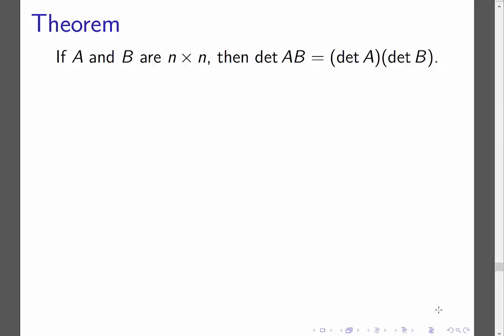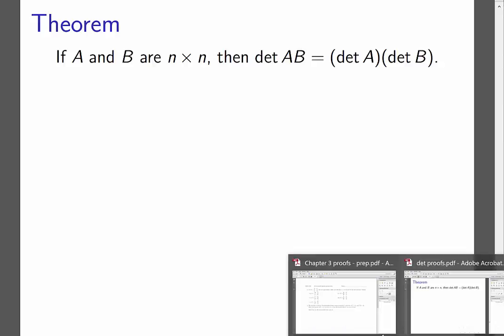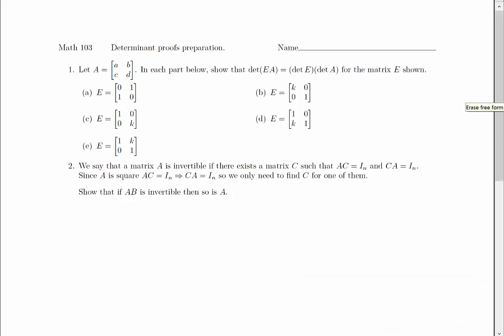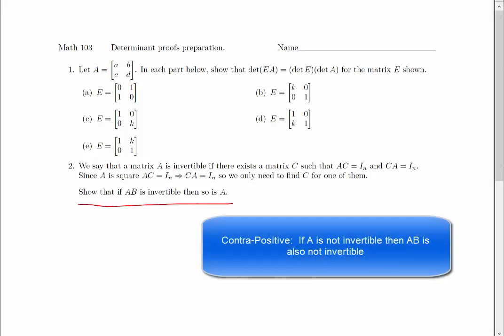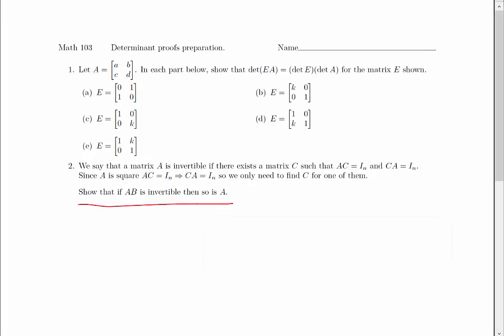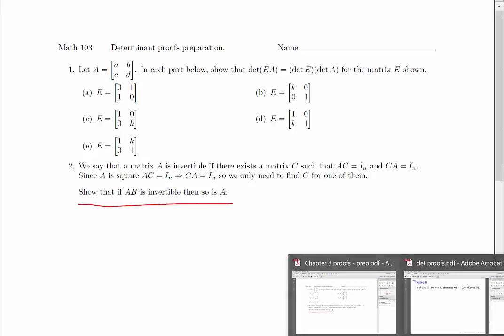I'm also going to assume that you have done the work in the preliminary exercises, specifically question number two — the question that asks you to show that if AB is invertible, then so is A. What I'm actually going to use here is the contrapositive of that result, which says that if A is not invertible, then AB is also not invertible.